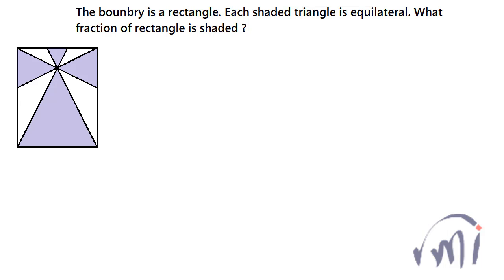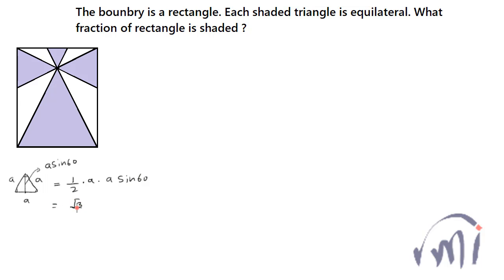The very simple thing is: if a triangle is equilateral, that means all the sides of the triangle are equal and all angles are equal to 60 degrees. So the base of the triangle is a and the height will be a·sin60. The area of the triangle will be (1/2)·base·height = (1/2)·a·a·sin60. Since sin60 = √3/2, this gives area = (√3/4)·a², where a is the side of the triangle.